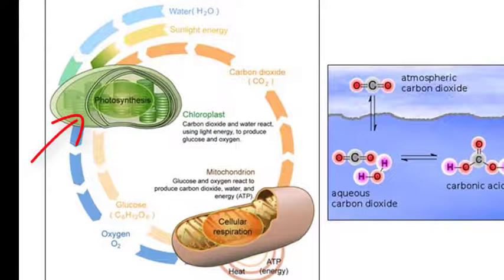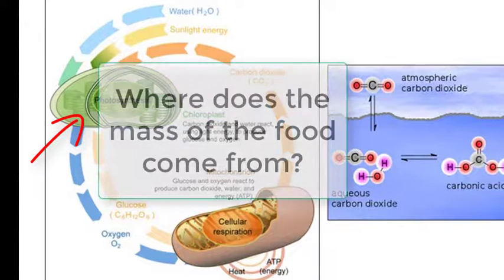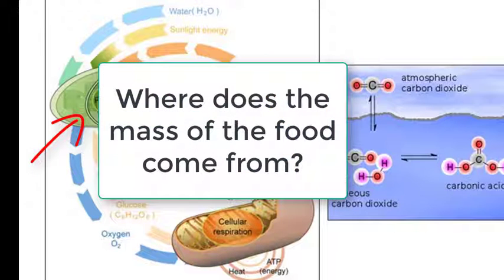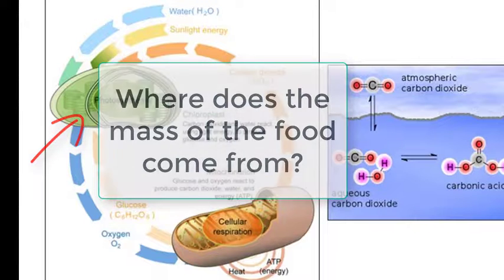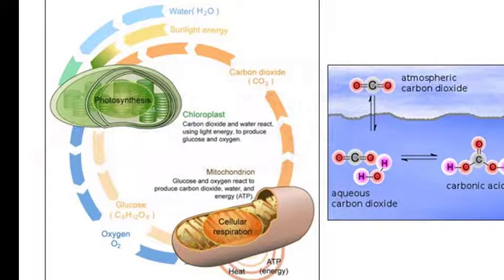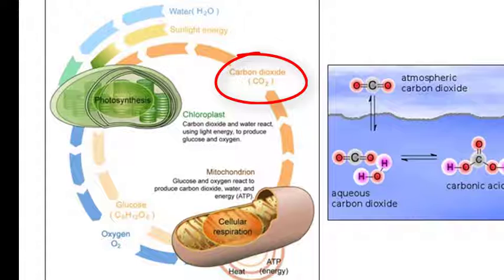Autotrophs are organisms that can create their own food. If they can do that, a question you should ask yourself is: where does this food come from? Because the mass has to come from somewhere. Interestingly, they take carbon from CO2 in the air and convert it into sugars and other essential compounds to support their growth.